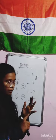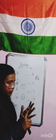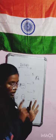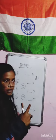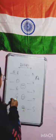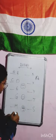A for Apple, B for Ball, C for Cat, D for Dog. What is D for Dog? C for Cat — what is C for Cat?